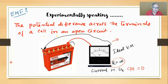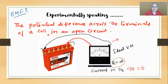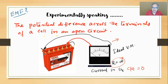The potential difference across the terminals of a cell - the plus terminal, minus terminal - in an open circuit. What is an open circuit? An open circuit is one in which current does not flow. This voltmeter has infinite resistance, so current does not flow through the voltmeter or through the cell, but it records the reading.